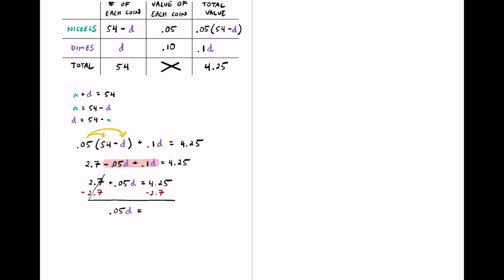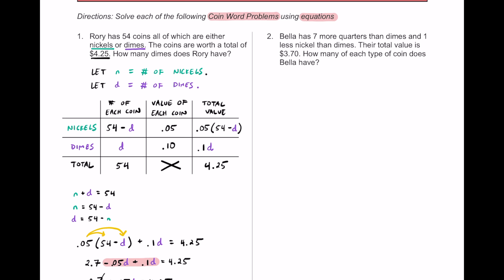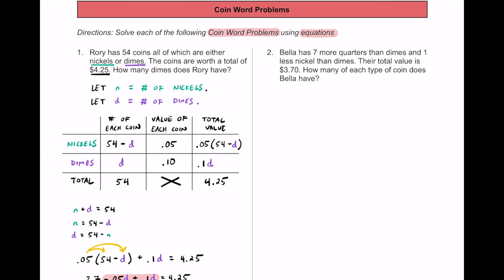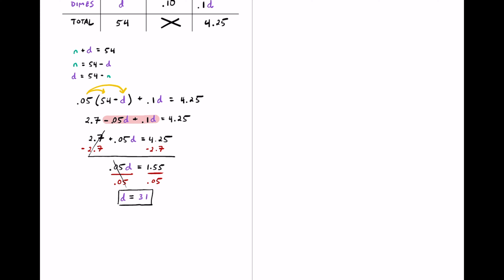Subtracting those decimals gives us 1.55. So 0.05d equals 1.55. We use the division property of equality and divide both sides by 0.05. On the left, 0.05 divided by 0.05 is 1, so we have d equals, and on the right, 1.55 divided by 0.05 equals 31. So the number of dimes d equals 31. In conclusion, Rory has 31 dimes.